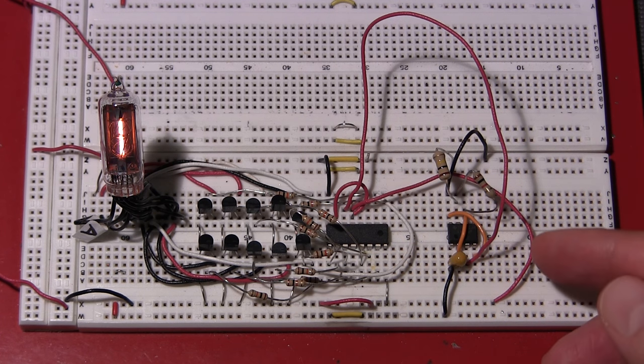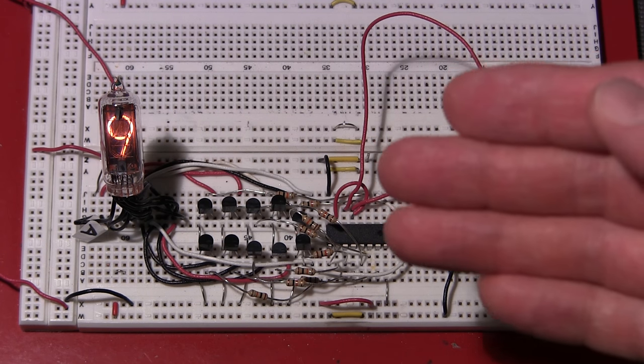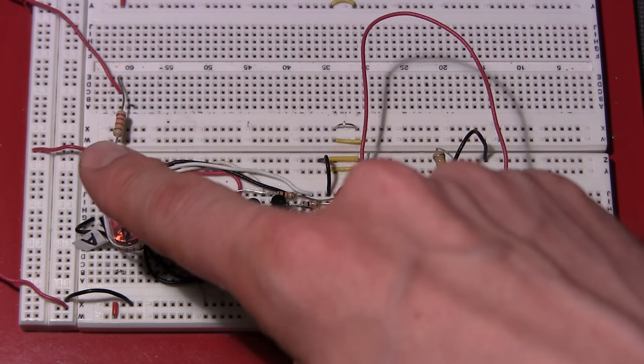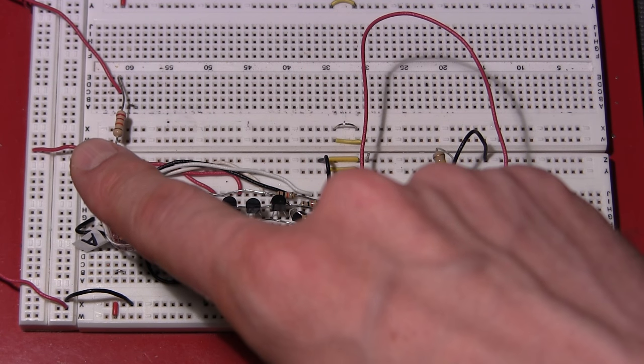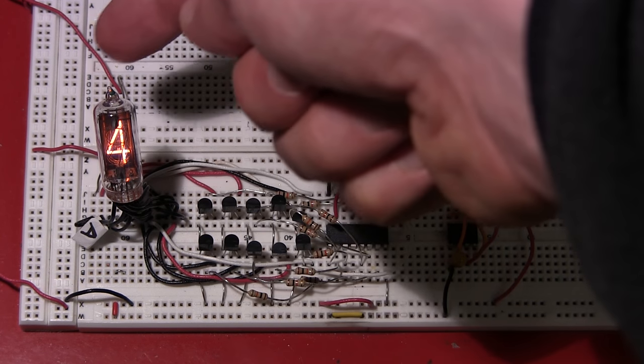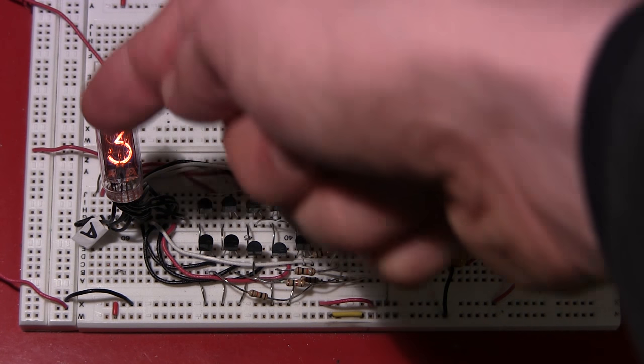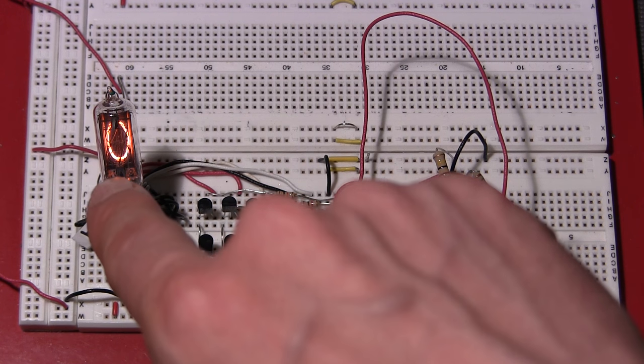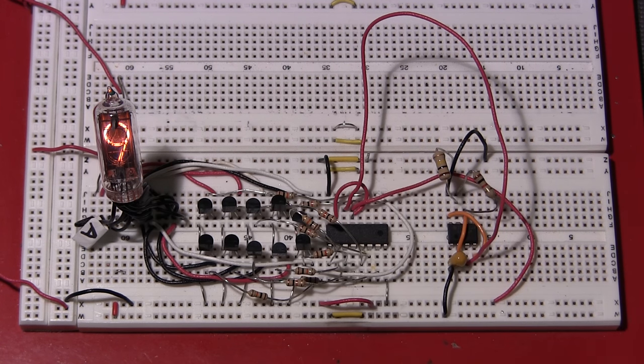The 555 timer works very well for this purpose. Again if you're going to put this together the Nixie tube needs that high voltage supply. See that 22k resistor back there? There's 170 volts coming in that lead and going through that 22k resistor into the anode of this tube. If you're working with Nixie tubes take care, there's high voltage involved. If you build this you're doing so at your own risk.